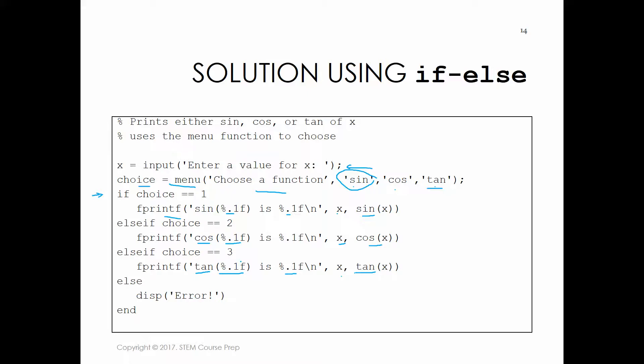We also have an else statement. This handles the case where the user accidentally closes out the menu using the little red X. If they close that window, no appropriate button will have been selected, so here you just display an error so they know they need to redo it. Then we close with end. That's the solution using if/else.